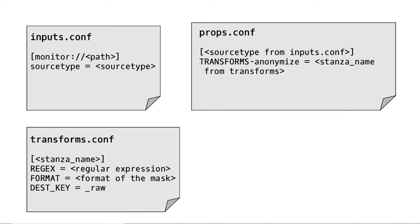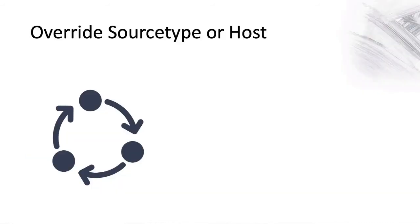So these are the three configuration files: props.conf, transforms.conf, and inputs.conf. The common factor — the common defining value — you can see here is the stanza name, which appears in both props.conf and transforms.conf.